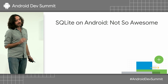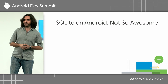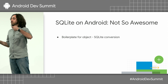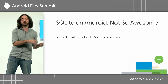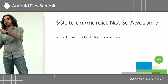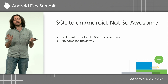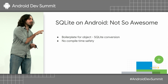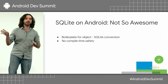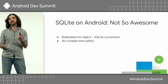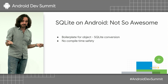SQLite on Android was not that cool. You need to write a lot of boilerplate code to convert between your Java and Kotlin objects and SQLite. There is no compile-time safety — if you are building an SQL query and you forget a comma or something like that, you're going to get a runtime crash.